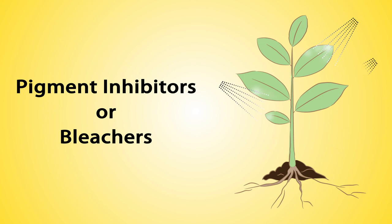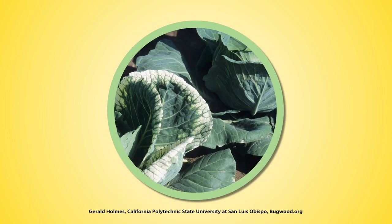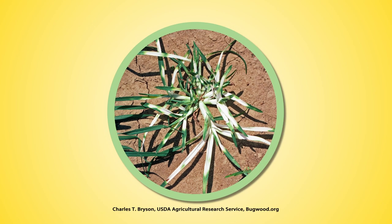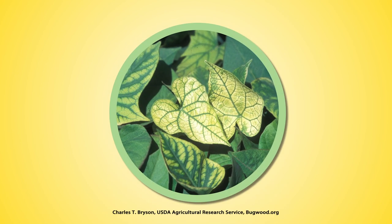These herbicides stop or interrupt cell growth and division. Pigment inhibitors or bleachers are herbicides that cause the tissue of a plant to turn white after treatment. Examples include oxazolidinone, isoxazole, and trichotone. They interrupt chlorophyll production in the plant, turning the plant tissue white and interrupting photosynthesis. The photosynthesis system can easily be damaged by sunlight without carotenoids.